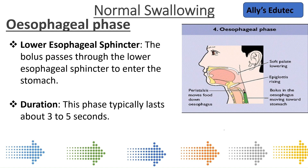In the pharyngeal phase, the swallowing reflex is triggered. The soft palate and the larynx — the voice box — elevate and close the nasal passage so food will not enter into the nasal cavity, which is our airway to the lungs. Food is then pushed into the esophagus through the upper esophageal sphincter, and with the peristaltic movement it is pushed down into the stomach through the lower esophageal sphincter. This is normal swallowing.